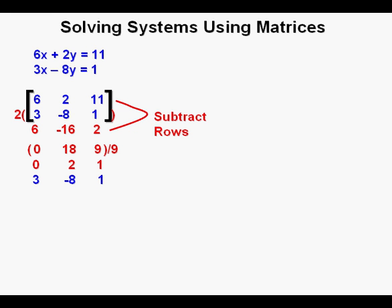From the rows we have already, we'll assemble a new matrix. As the top row, we now have our original bottom row of 3, negative 8, and 1. And as our new bottom row, we bring down our most recently created row in red of 0, 2, and 1. And that becomes our new matrix we're working from now.